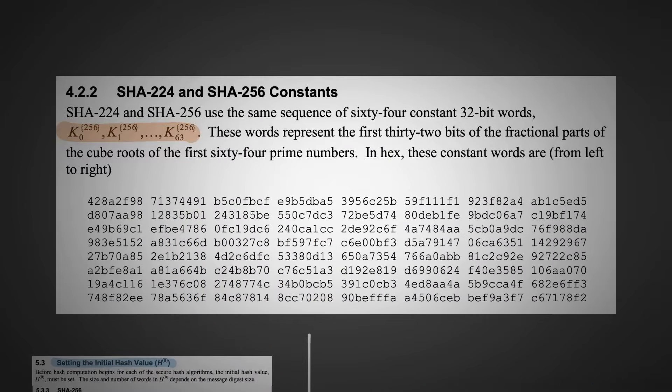Some other constants we need to be aware of are K0 to K63. These are derived by taking the first 32 bits of the fractional parts of the cube roots of the first 64 prime numbers, which is a mouthful, to say the least.